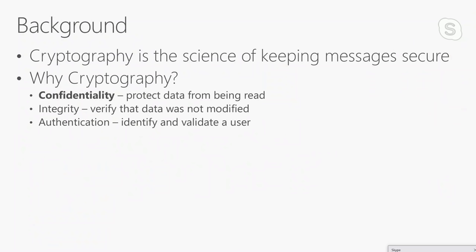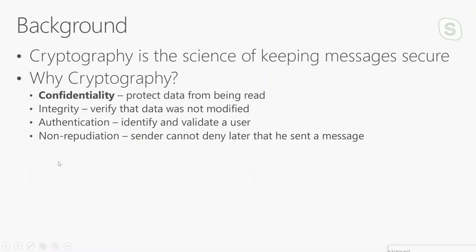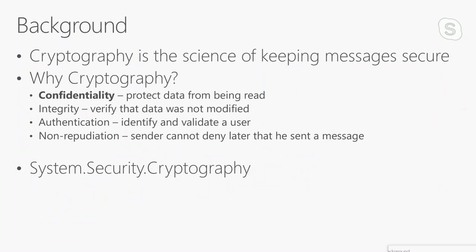We've also got authentication, where you want to identify and validate who a user is. And we're also going to have non-repudiation, so a sender can't deny later that they sent a given message. This is all in the System.Security.Cryptography namespace — that's where all these classes will come from. And the most important thing: if you get nothing else out of this talk, don't try to write your own cryptography. This stuff is well-vetted. A lot of people have seen it. It's built into the framework for us already.